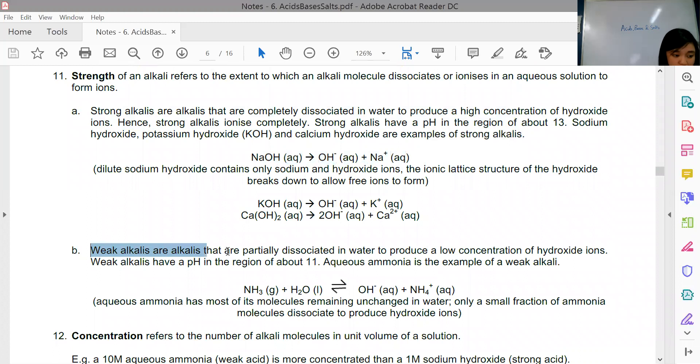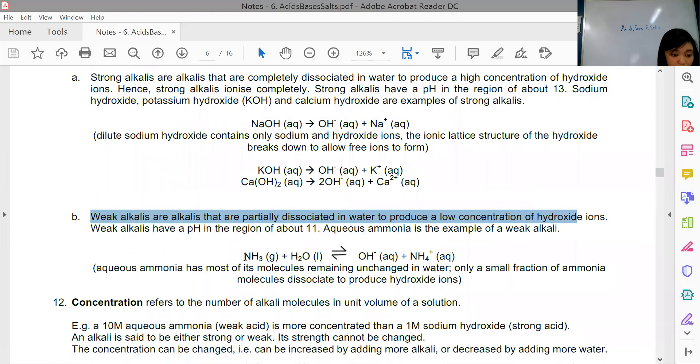For weak alkalines, they are alkalines that are partially dissociated in water to produce a very low concentration of hydroxide ions. An example is ammonia.